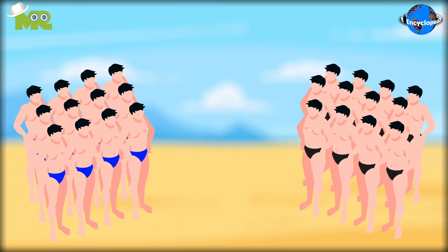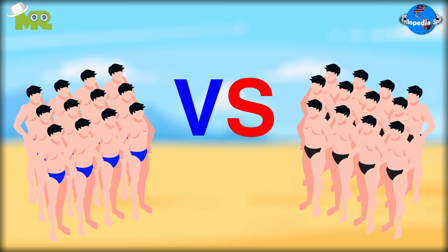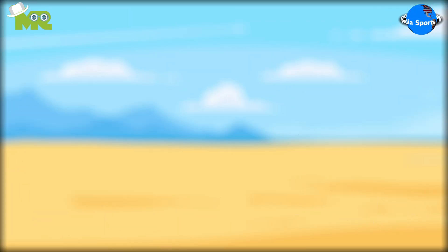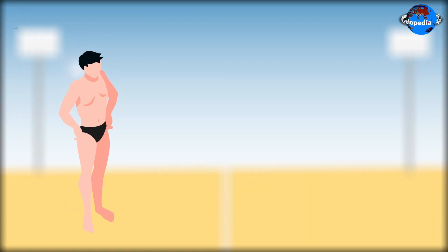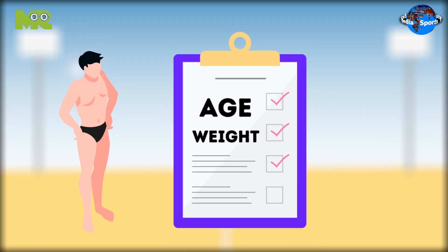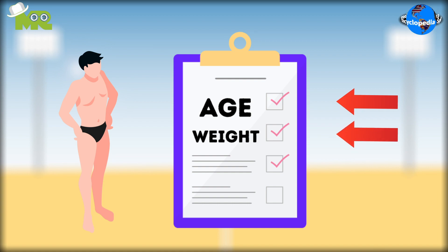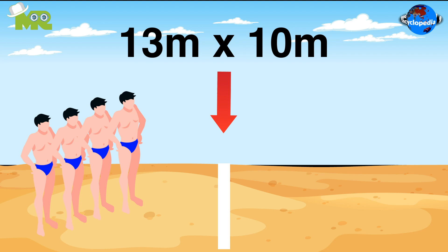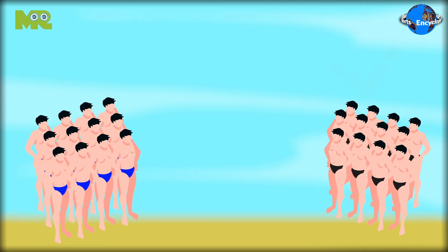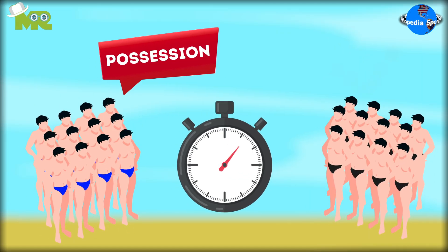Kabaddi is a team sport that involves two teams of 12 players, but only 7 players stay in the field at any one time. The matches are categorized and teams are made according to different ages and weight categories. The game is played on a surface that measures 13 by 10 meters, separated into two halves by a white line, and each team is given possession of one half.